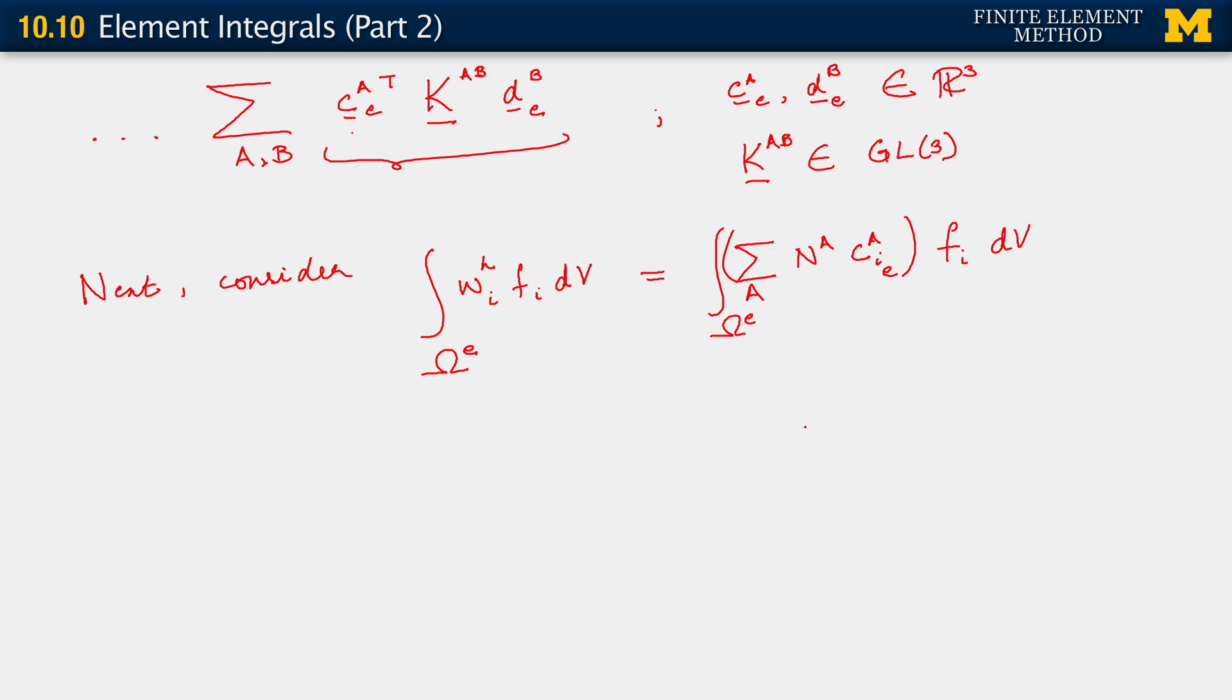Using our usual tricks, and here I will take the liberty of skipping several steps at once. So we get sum over A, C_A^ie, integral over omega_c, N_A, F_i, determinant of J_C, D_xi_C.